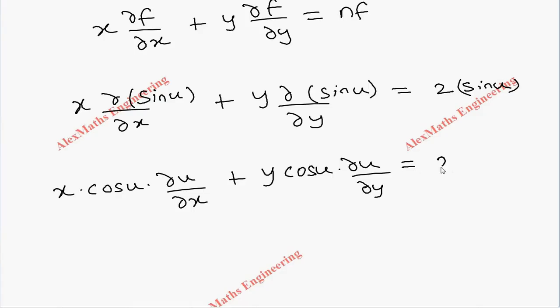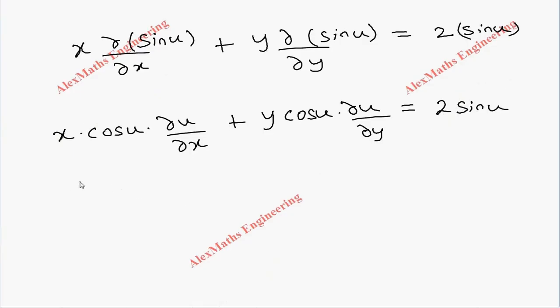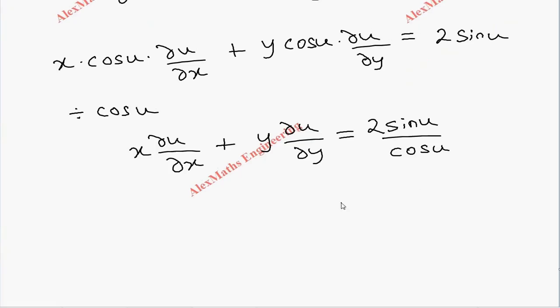This equals 2 sin u. Now throughout we can divide by cos u, so the first term is x∂u/∂x + y∂u/∂y equal to 2 sin u divided by cos u, which is nothing but tan u. So x∂u/∂x + y∂u/∂y = 2 tan u.